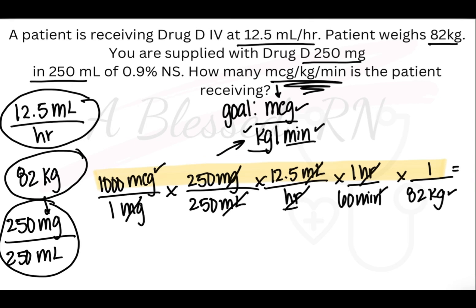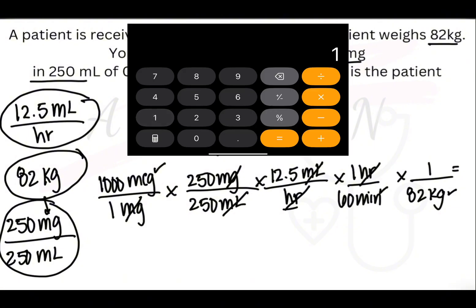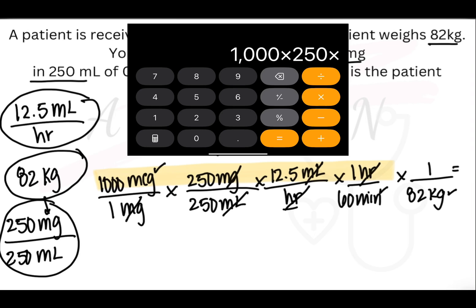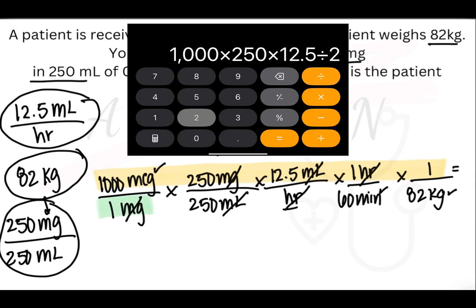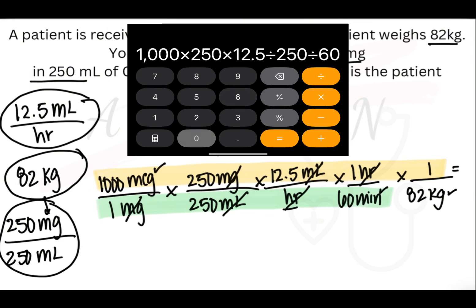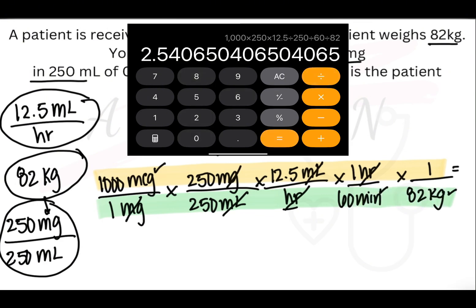Enter in all of your numbers across the top. Once you get to the end of that top line, hit divide. Then enter all of our numbers across the bottom, but in between those numbers you'll hit divide. So 1,000 times 250 times 12.5, divide 250, divide 60, divide 82. Hit the equal sign one time and we get the same answer.